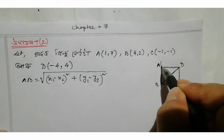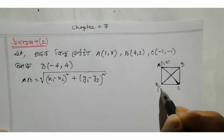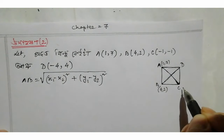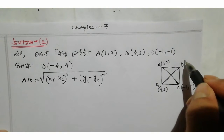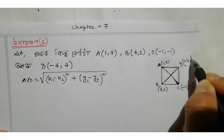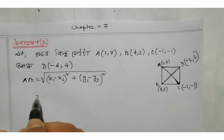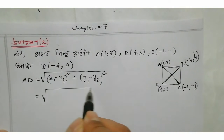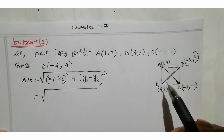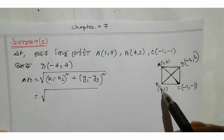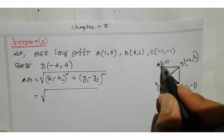Remember what I wrote here. Now I will calculate distance AB. Let me write only AB: A is at (1,7) and B is at (4,2). This gives us coordinates to work with — x1, y1 and x2, y2.